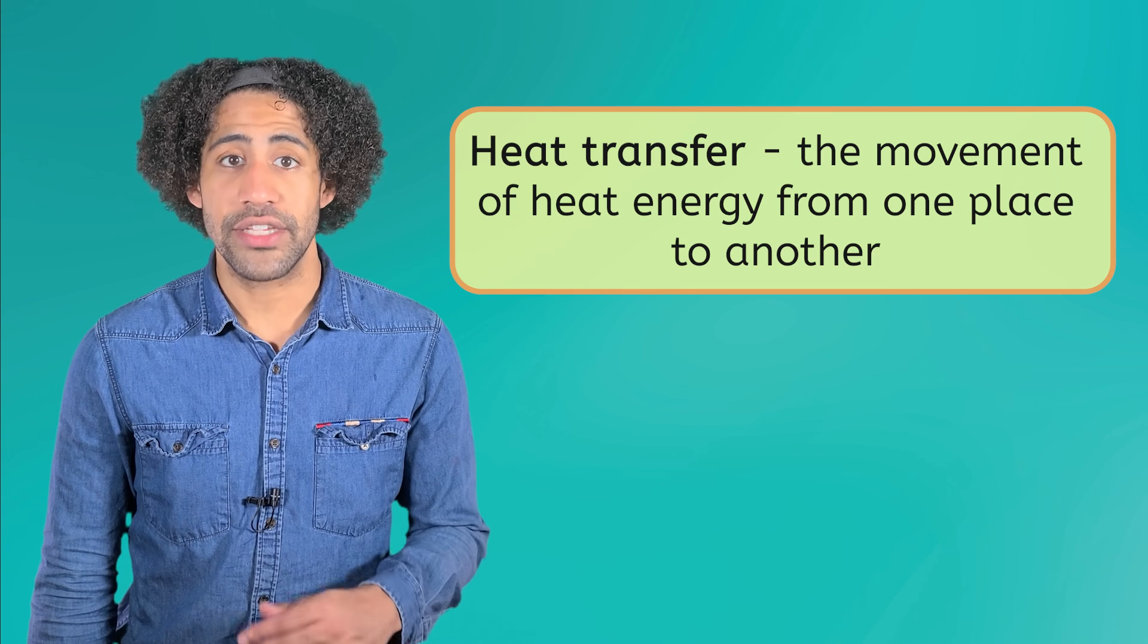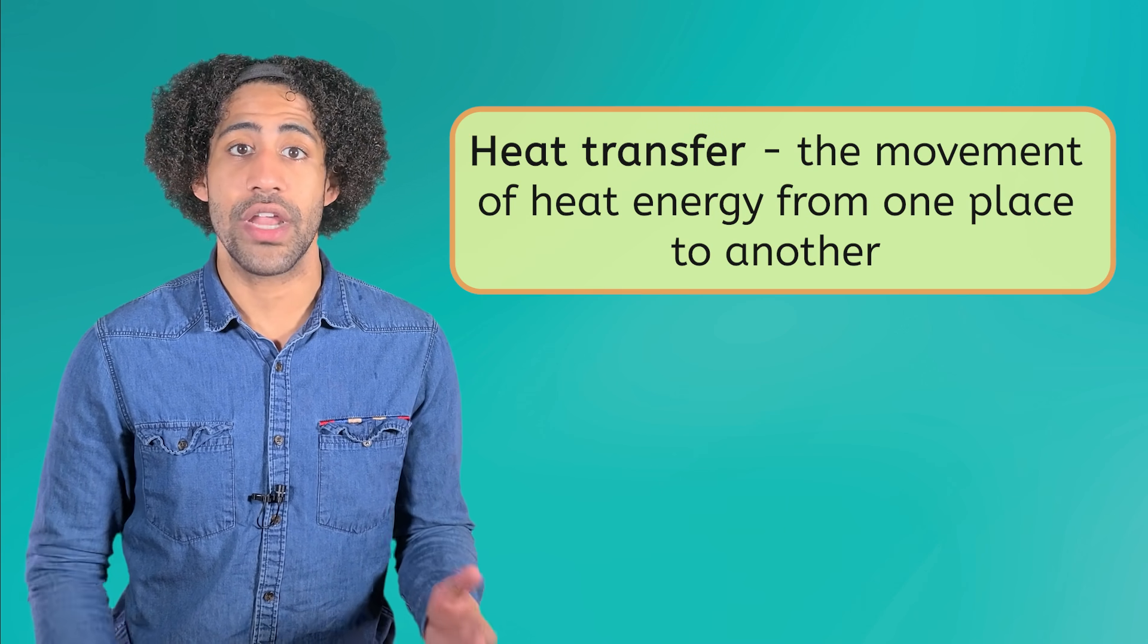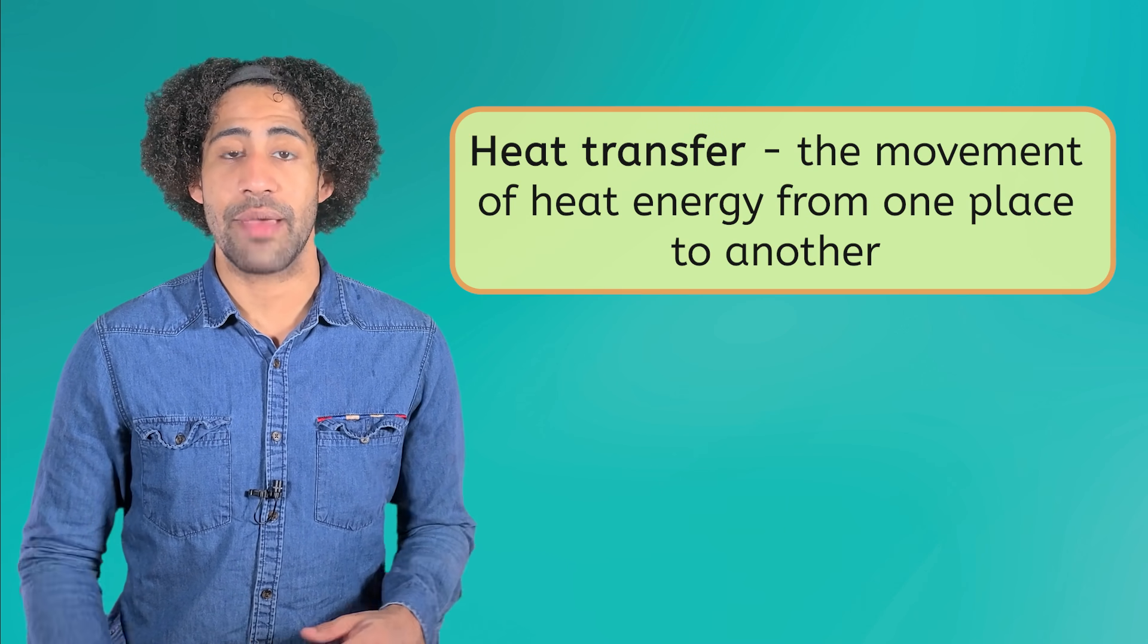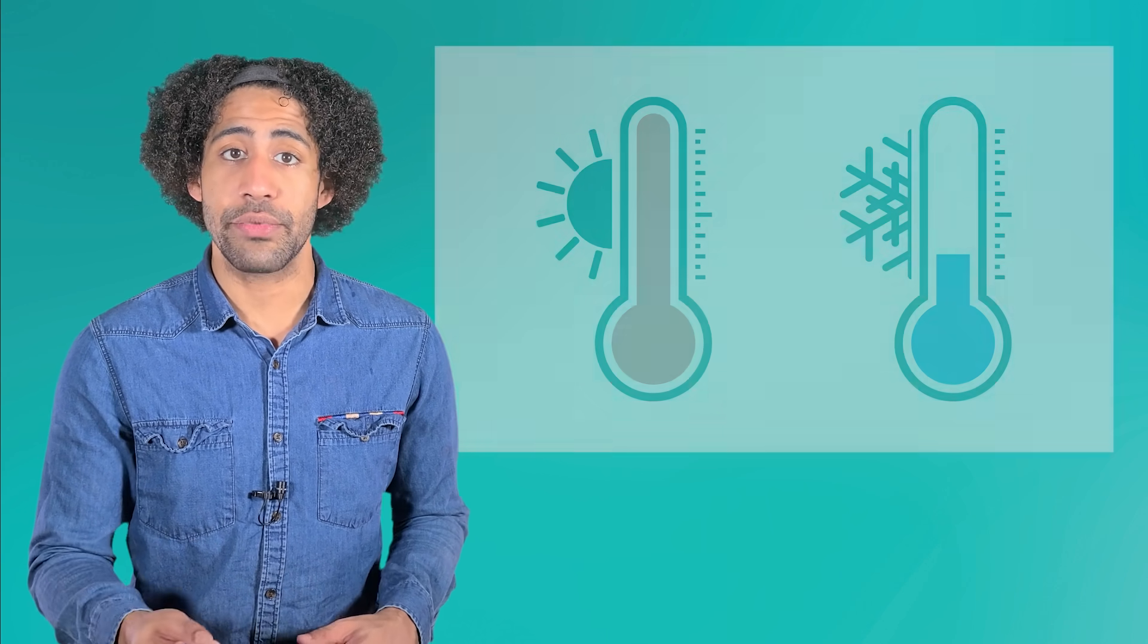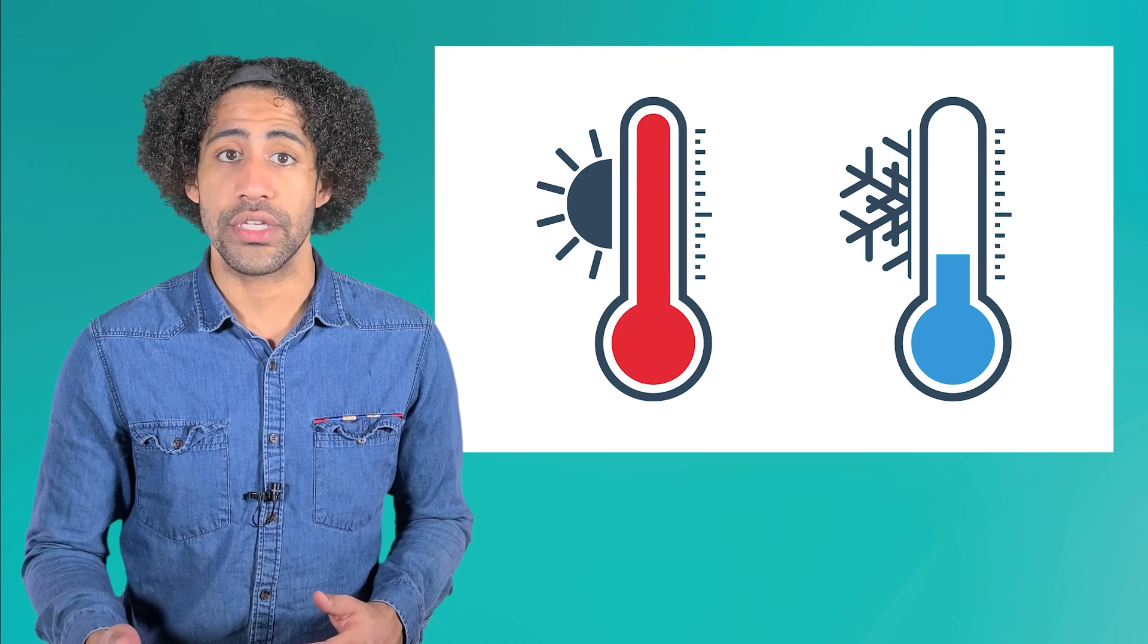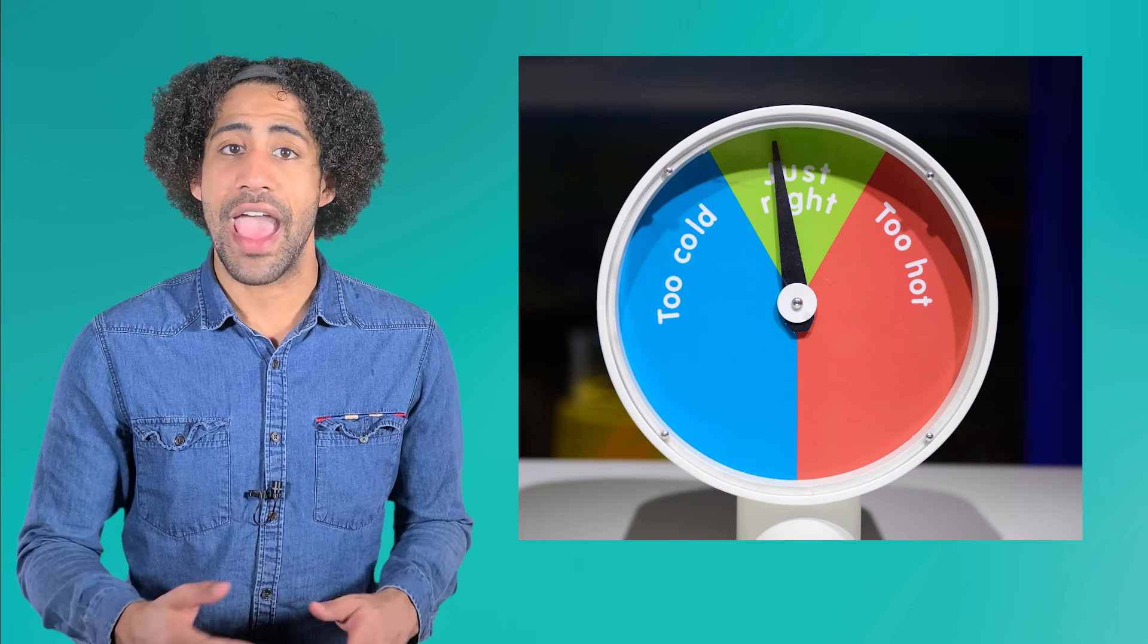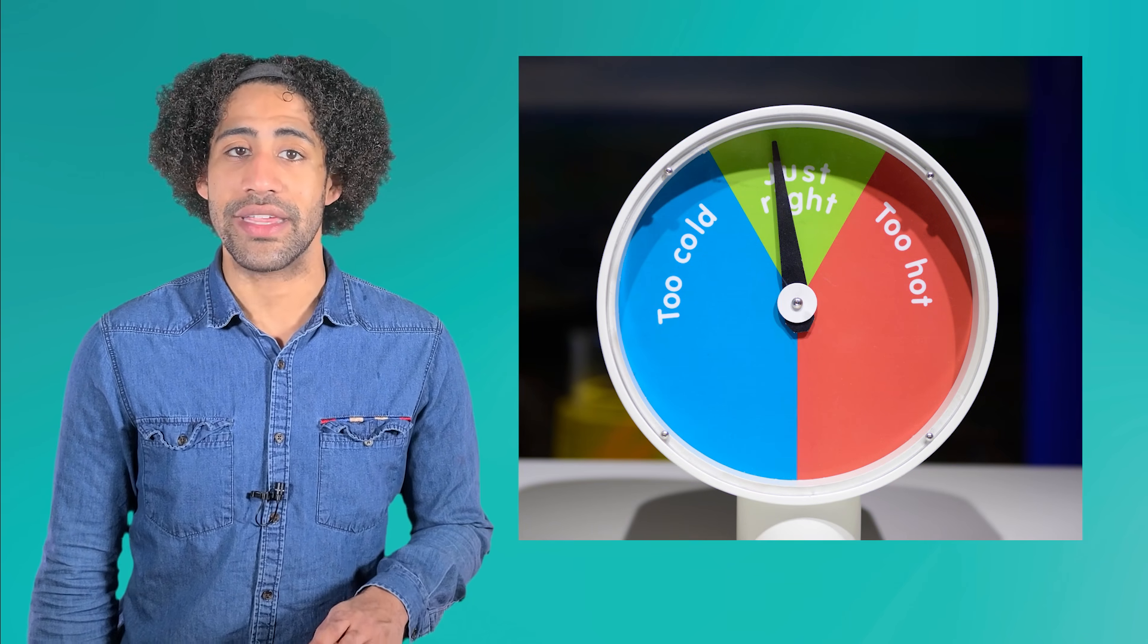Heat transfer is the movement of heat energy from one place to another, like through the Earth's atmosphere. Heat transfer on a global scale causes temperature to change from warm to cold and generally keeps the Earth at a comfortable temperature for us to live in. There are three main ways that this heat transfer occurs.